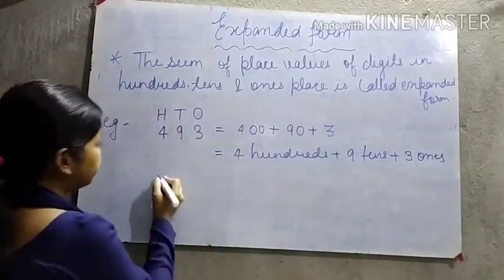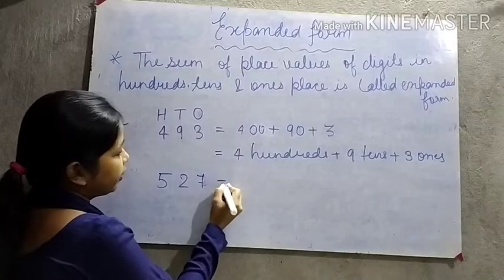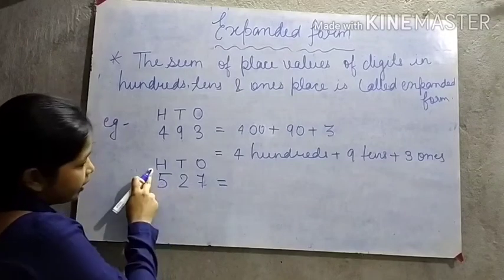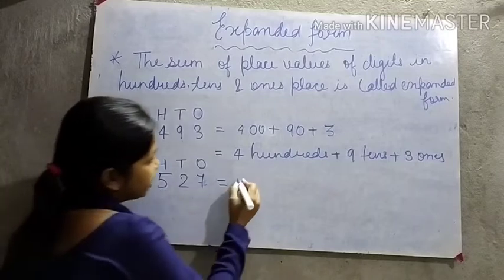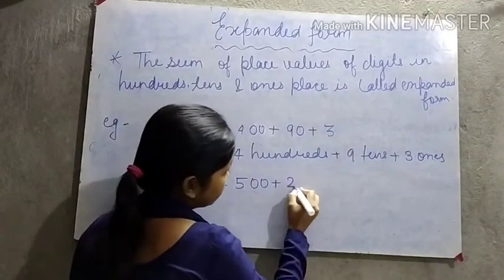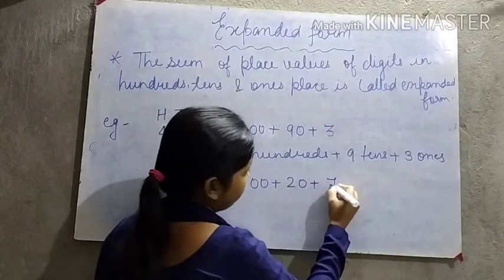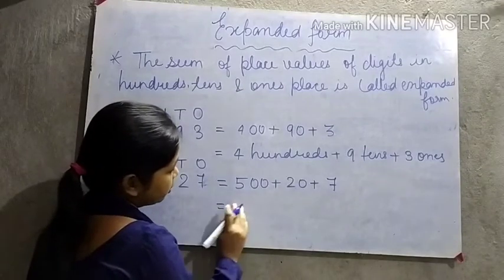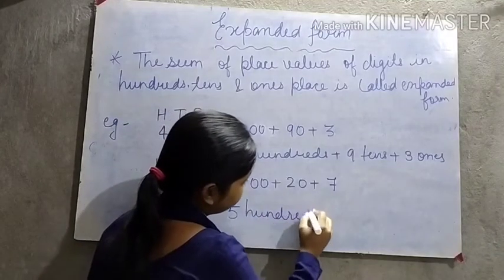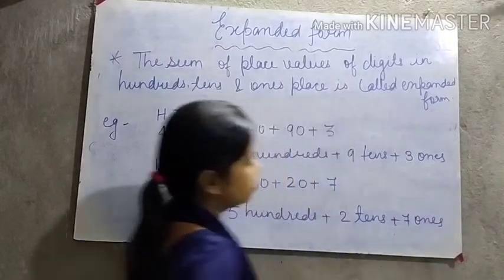Let's take one more example: 527. Again, we will assign its position — hundreds, tens, and ones. 5 is in the hundreds column, so its place value is 500. Plus, 2 is in the tens column, so the place value of 2 is 20. 7 is in the ones column, so the place value of 7 is 7 only. In numerals, we write: 5 hundreds plus 2 tens plus 7 ones.